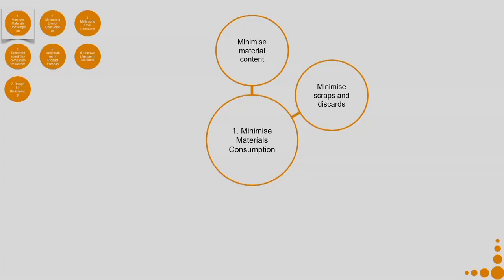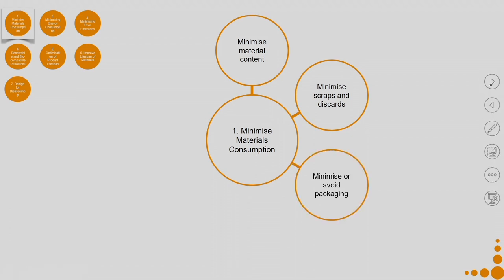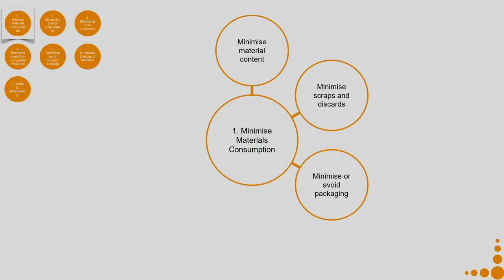In any case, we should try to minimize scraps and discards during the manufacturing process. Then minimize or avoid packaging. For example, if I have a pen which is very fragile, I will need additional layers of packaging so it does not get damaged during transportation or while displayed in a shop. I could have designed the pen in a manner that requires no packaging or a lesser volume of packaging.